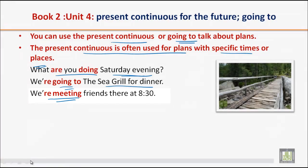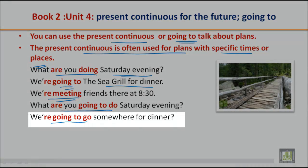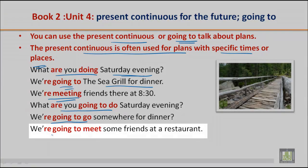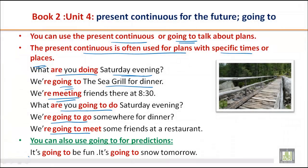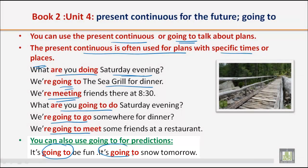'We are meeting friends there at 8:30.' You can also use 'going to' for predictions — for example, 'It's going to be fun' or 'It's going to snow tomorrow.' So both present continuous and 'going to' can talk about plans, and 'going to' is also used for predictions. That's all for Unit 4. Hope you have enjoyed your lesson. Have a nice day, see you in the next class.